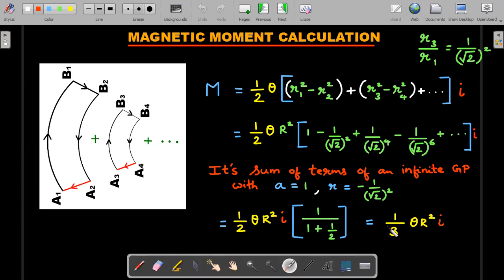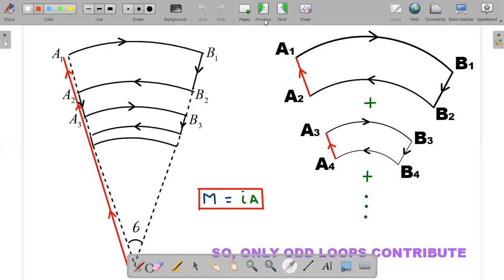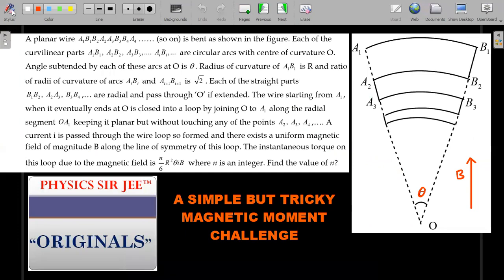When you solve this, you end up getting 1/3 outside, and for the torque calculation it's M into B. Since it's given as n/6, and you got 1/3, the value of n comes out to be equal to 2. That's your correct answer in the final exam.